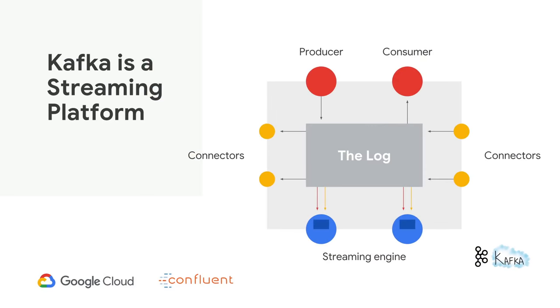We say that Kafka is a streaming platform. What does it actually mean? It means that you can produce events. Kafka will store them as an ordered stream of events, it will maintain this order. And then you can consume those events, do stuff to them, and write them back to Kafka — which is what we call stream processing.